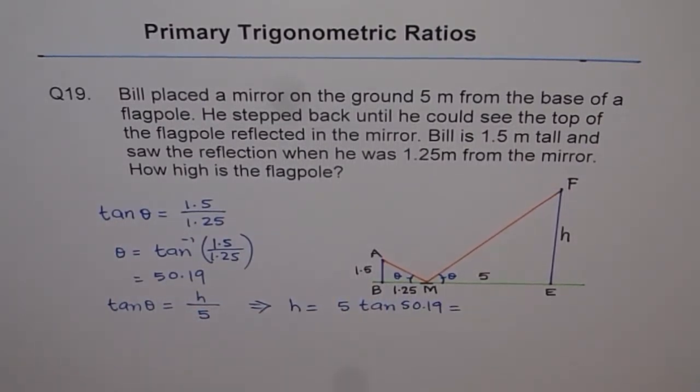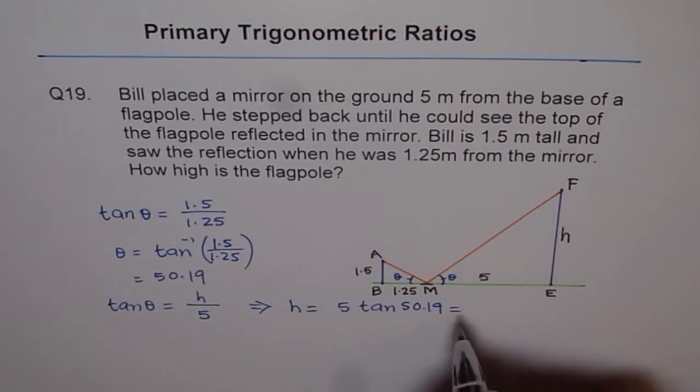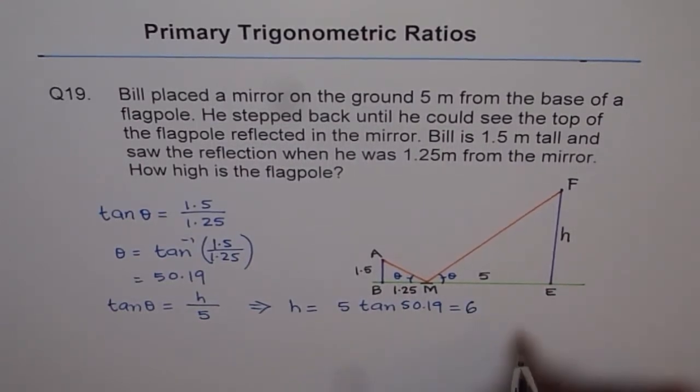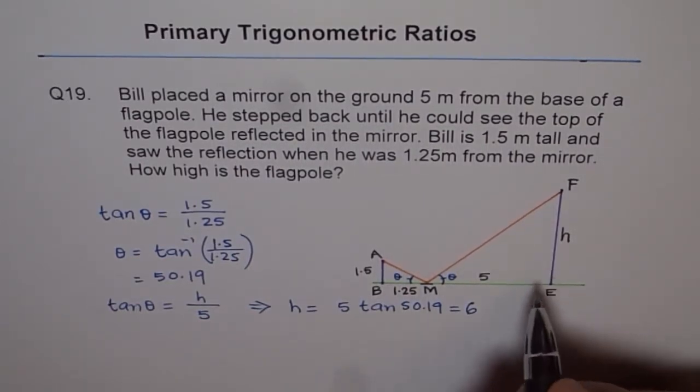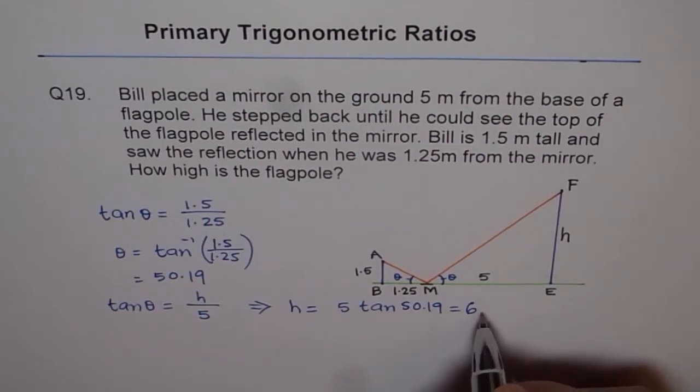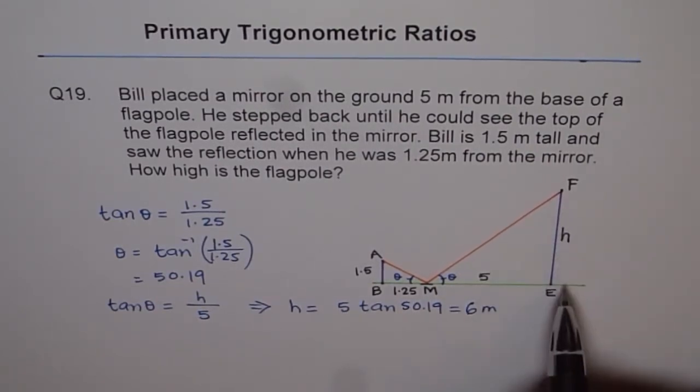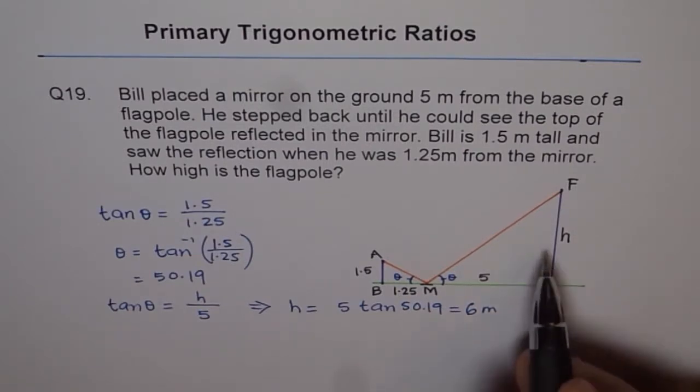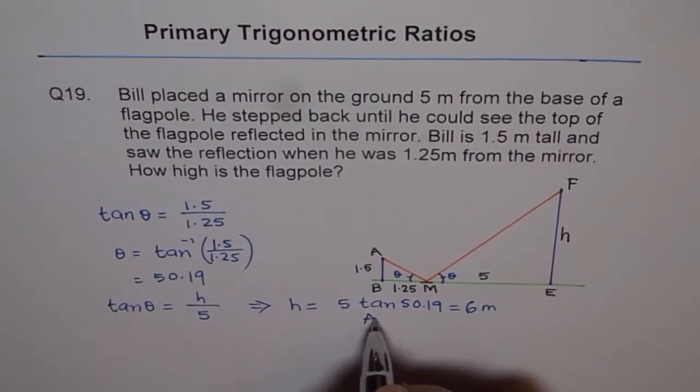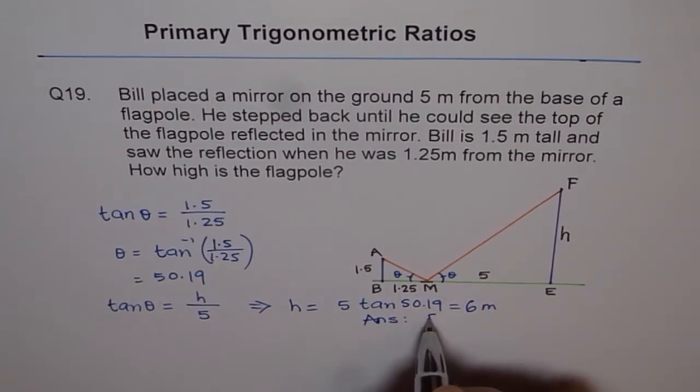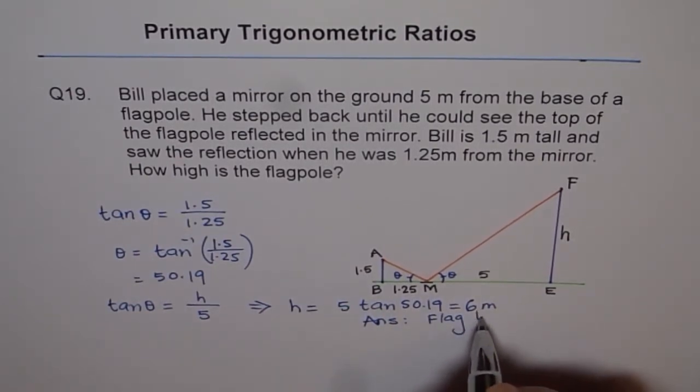We have tan of angle times 5, which gives us 6 meters. So the height is 6 meters. Our answer is that the flag height equals 6 meters.